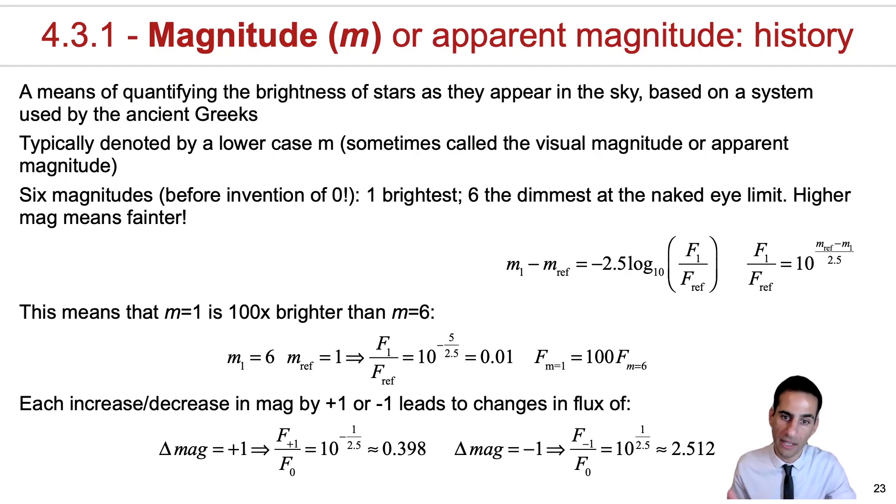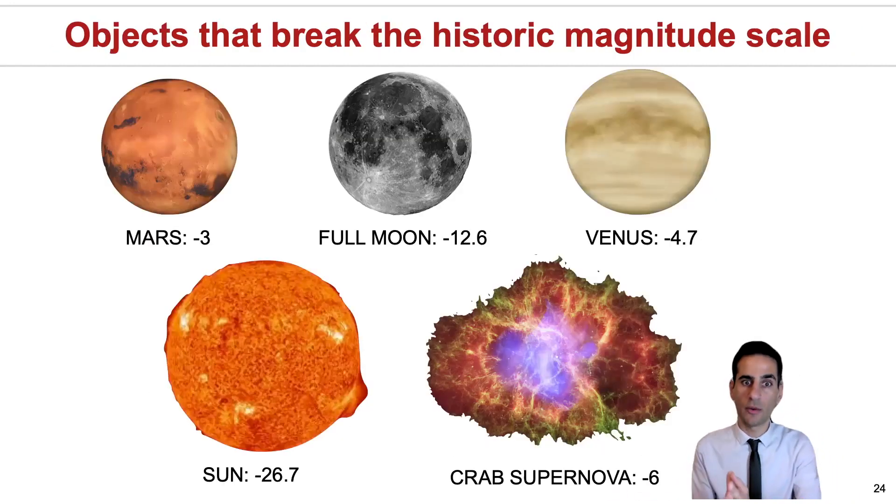But every time the magnitude changes, for example by minus one, then you're increasing the flux by a factor of 2.5 roughly. And when the magnitude goes up by plus one, then what you're actually doing is multiplying by a factor of almost 0.4. So it is important to keep in mind that when the magnitude goes up, you're becoming fainter. When it goes down, the brightness is increasing.